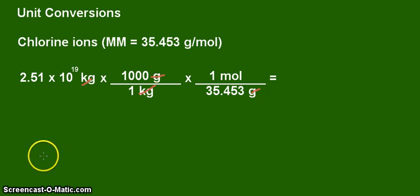So all we need to do now is to do the calculation. And the answer is 7.07 times 10 to the positive 20 moles of chlorine ions in the whole volume of the Earth's oceans.